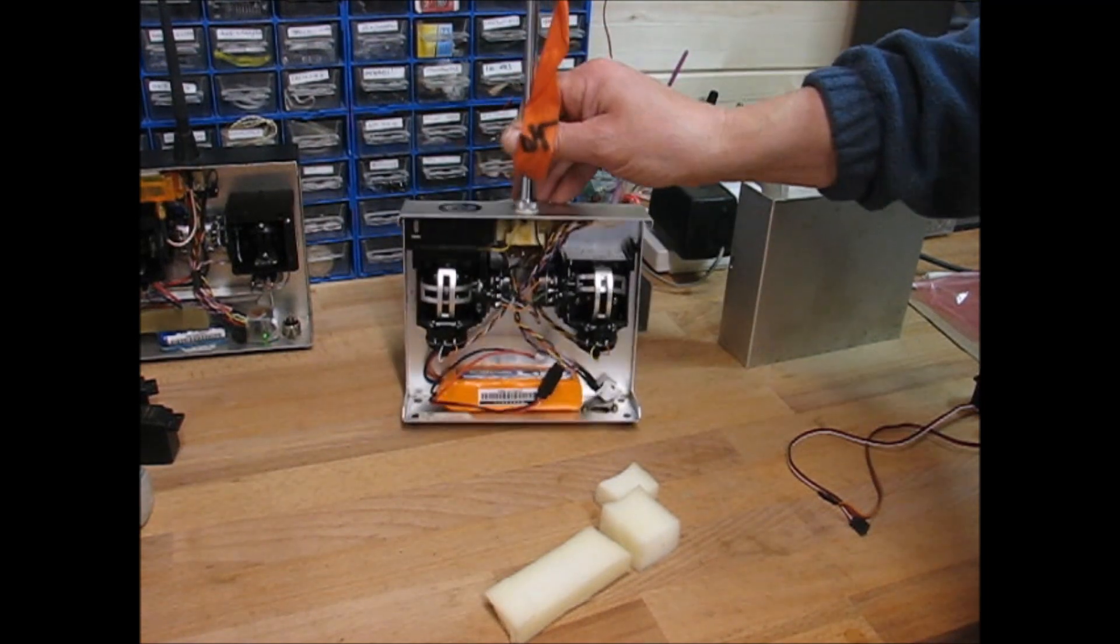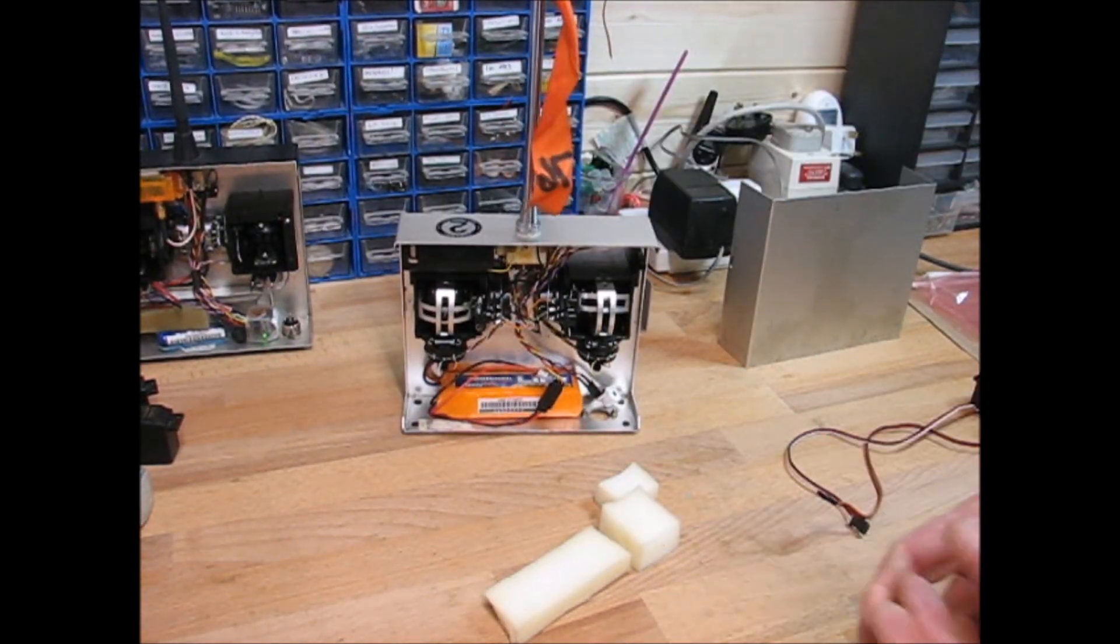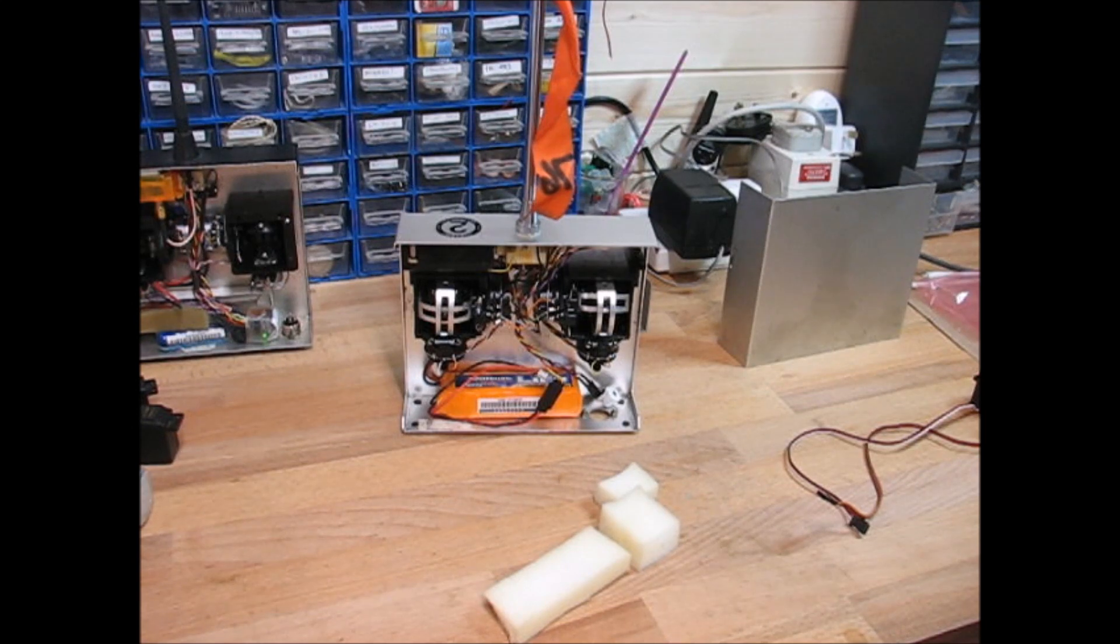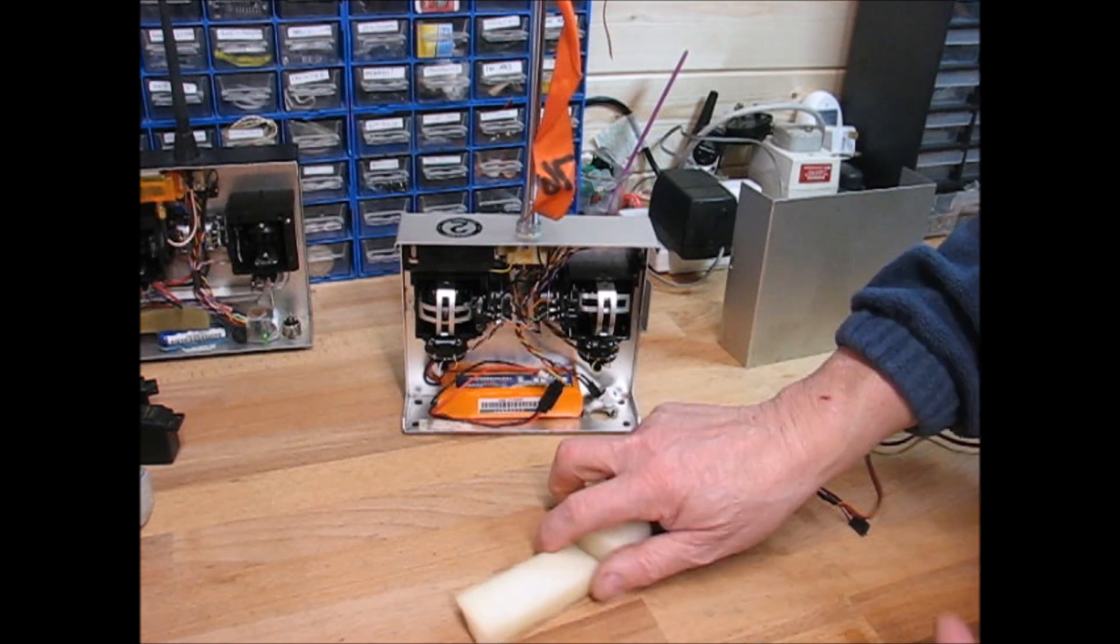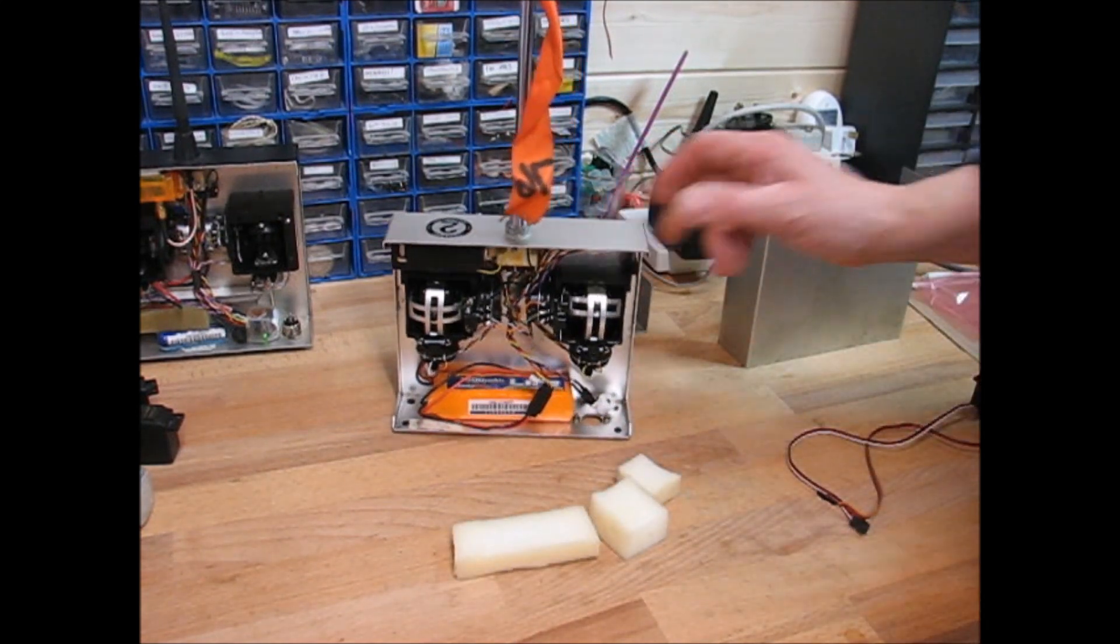We've done reasonably well. I think we've got four proportional channels, a V-tail mix, inactivity timer, throttle warning, elevon mix. It's quite a lot from a modest little DigiSpark, so I think it's done very well in this case.